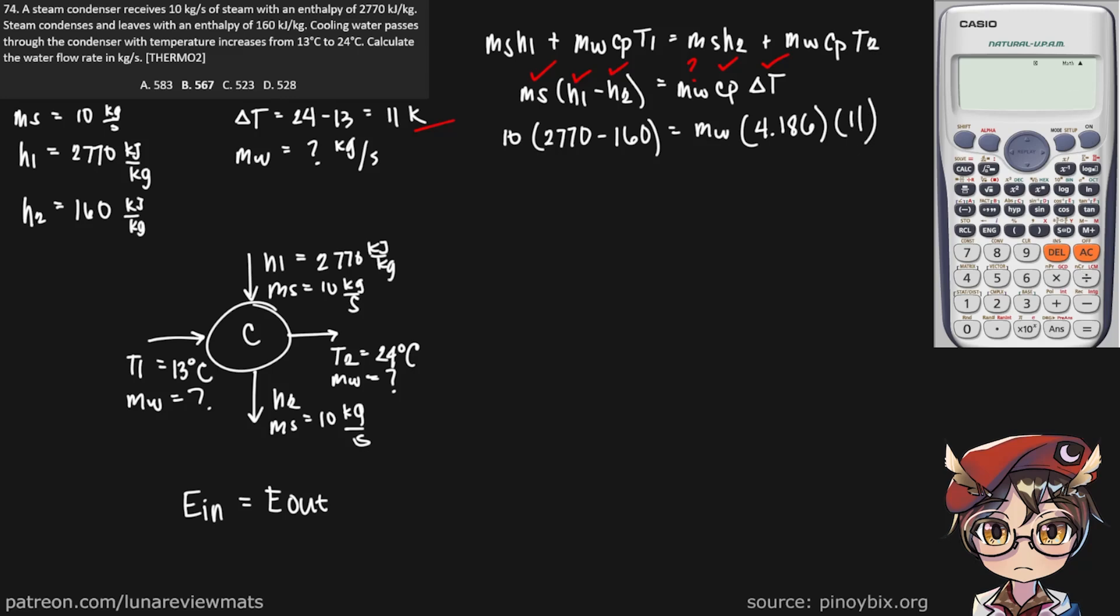So we put this in our calculator. And there we have it, the mass water flow rate in kilograms per second. And that is our final answer.